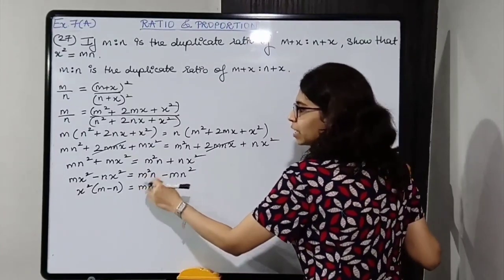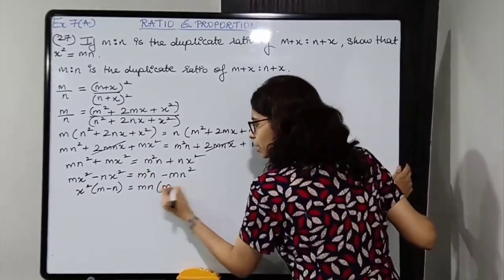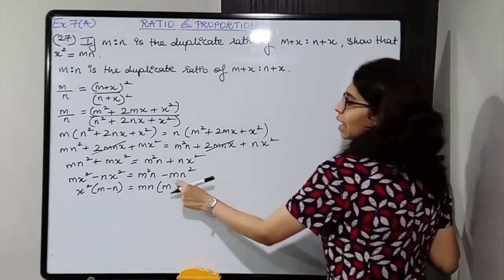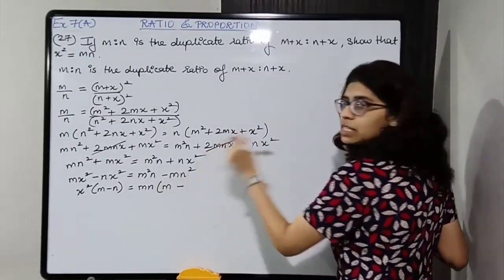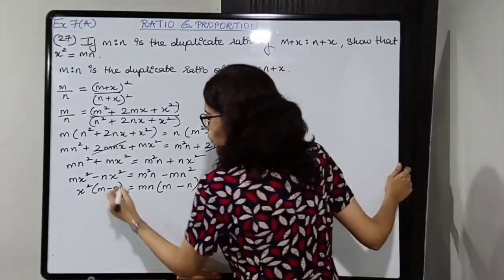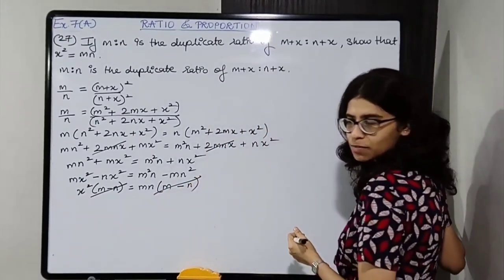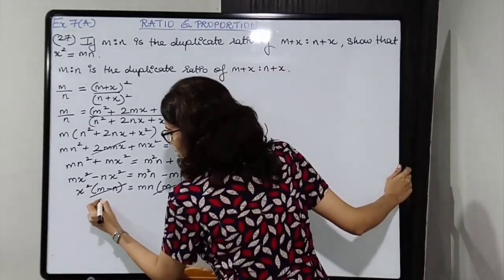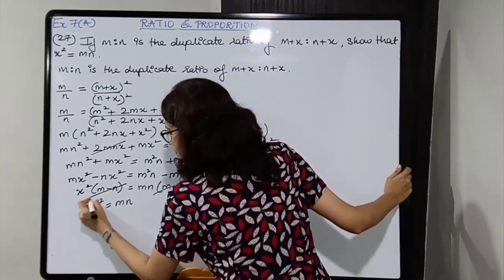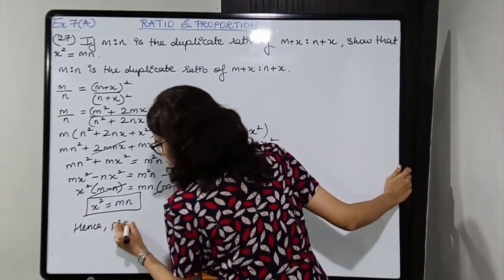So mn common: m squared n gives one m remaining, and mn squared gives one n remaining. So the bracket is m minus n on both sides. We can cancel out m minus n from both sides, and we are left with x squared is equal to mn. Hence proved.